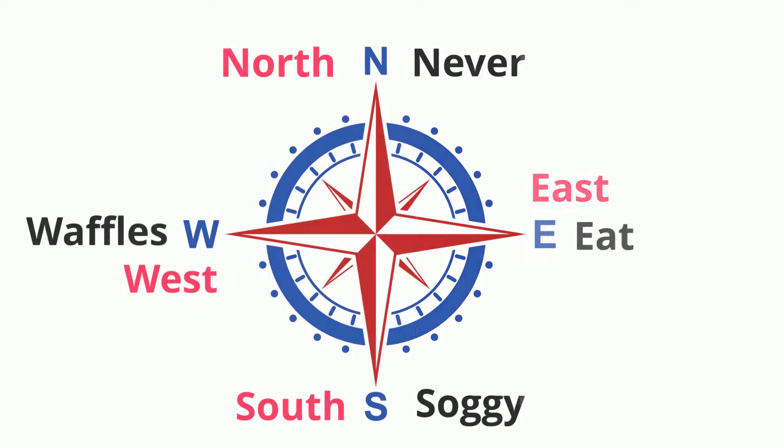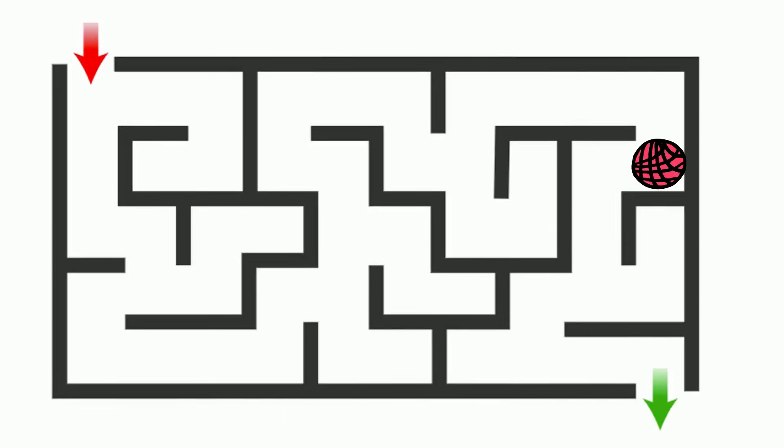So let's take a look at the directions again. Let's move a sphere out of the maze. We are going to begin by going west, then south, then west, then south, then east, and south again to get out.